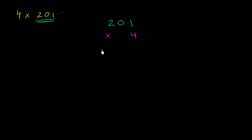And so I have 201 times 4. Now, just like we did when we were multiplying a 1 digit times a 2 digit, we do essentially the same process. We first multiply 4 times the 1. Well, 4 times 1 is equal to 4. So we put a 4 right over there in the 1's place.